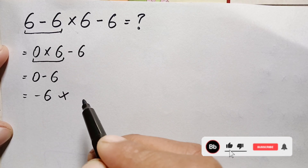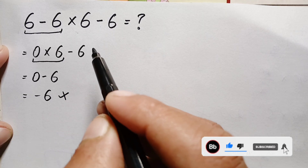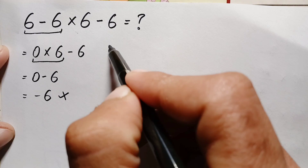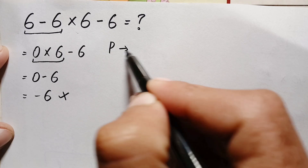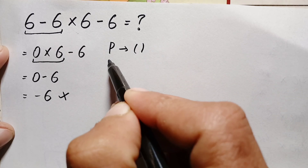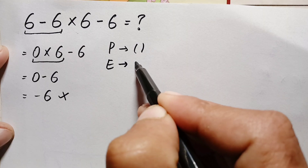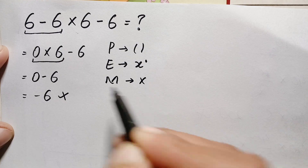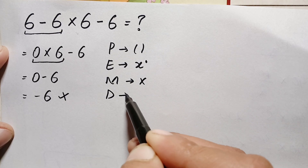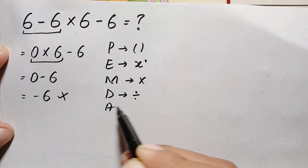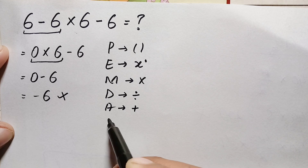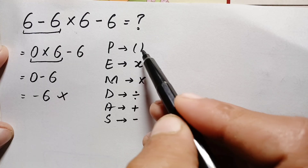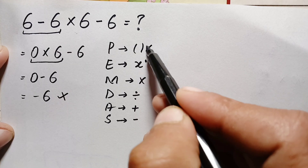To get the correct answer, we have to follow the correct order of operations, or the PEMDAS rule. In PEMDAS: P stands for parenthesis, E stands for exponents or powers, M stands for multiplication, D stands for division, A stands for addition, and S stands for subtraction.